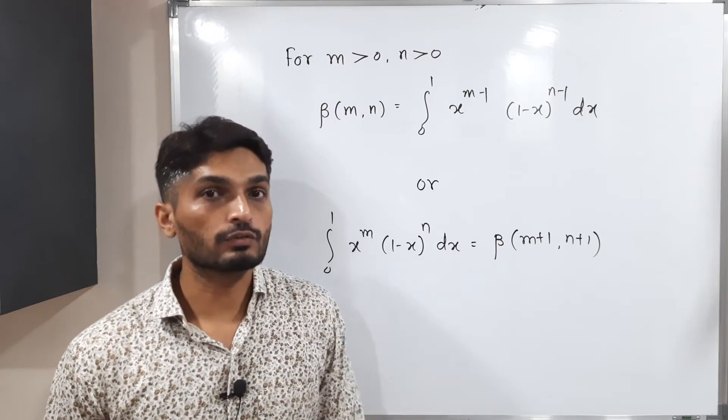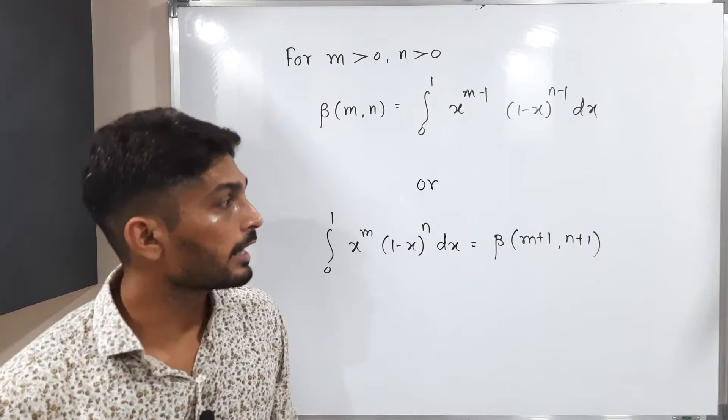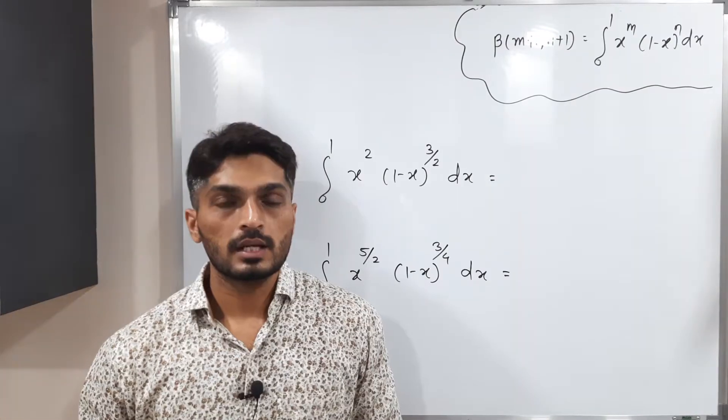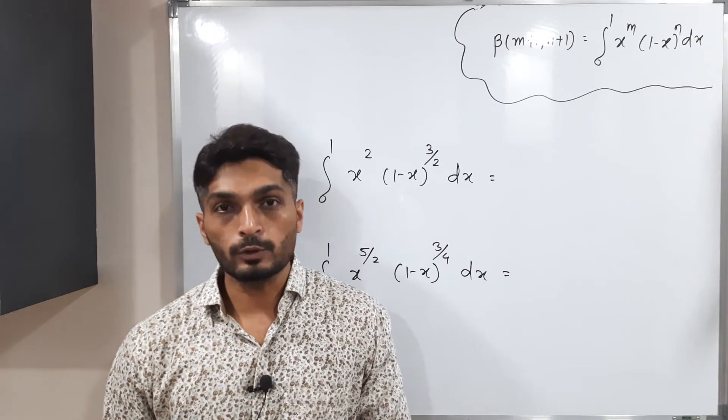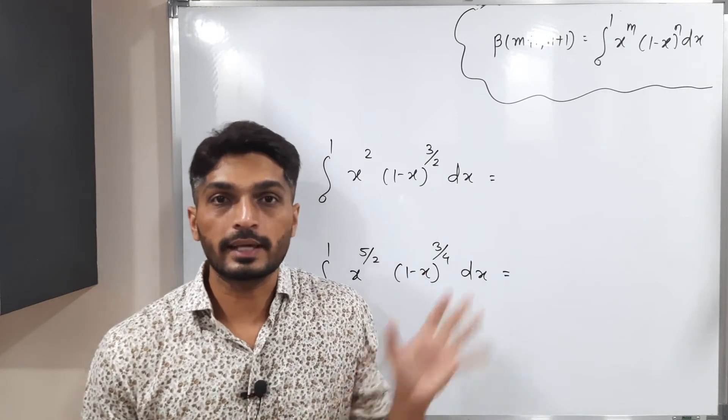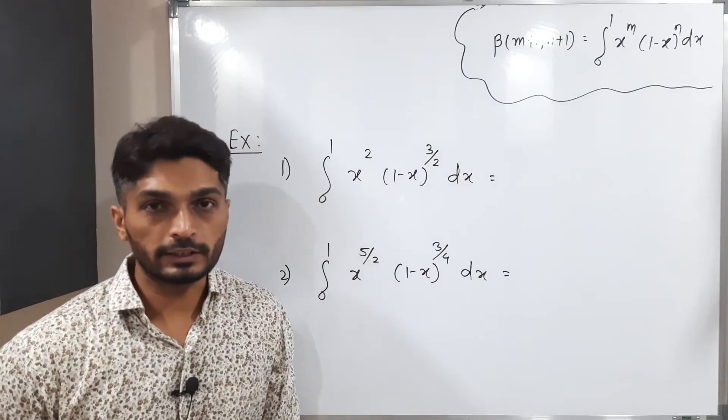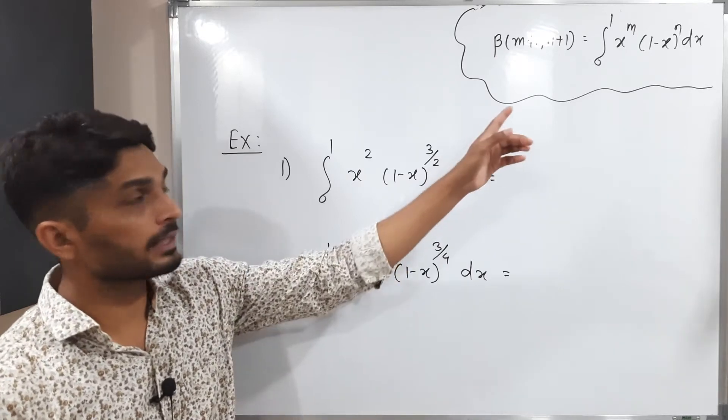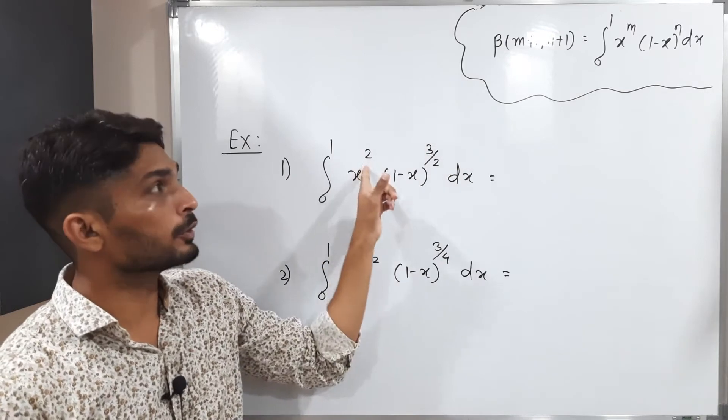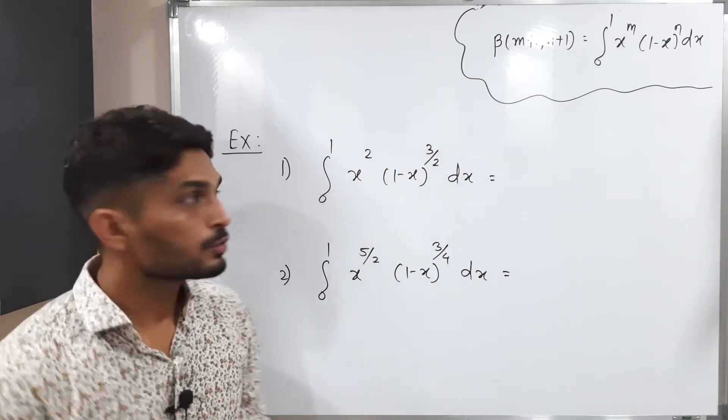Make a screenshot of this definition, and we will discuss a few examples. We are going to solve these two examples. Let us find the value of the first integral. If you compare that integral with the standard integral, you can easily see m equals 2 and n equals 3/2. We are going to express it in the form of beta function.